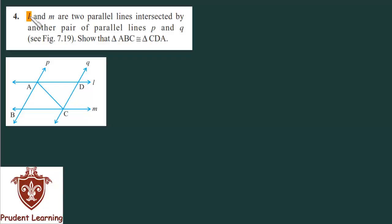The question is: L and M are two parallel lines intersected by another pair of parallel lines P and Q. The figure is given, and we have to show that triangle ABC is congruent with triangle CDA.